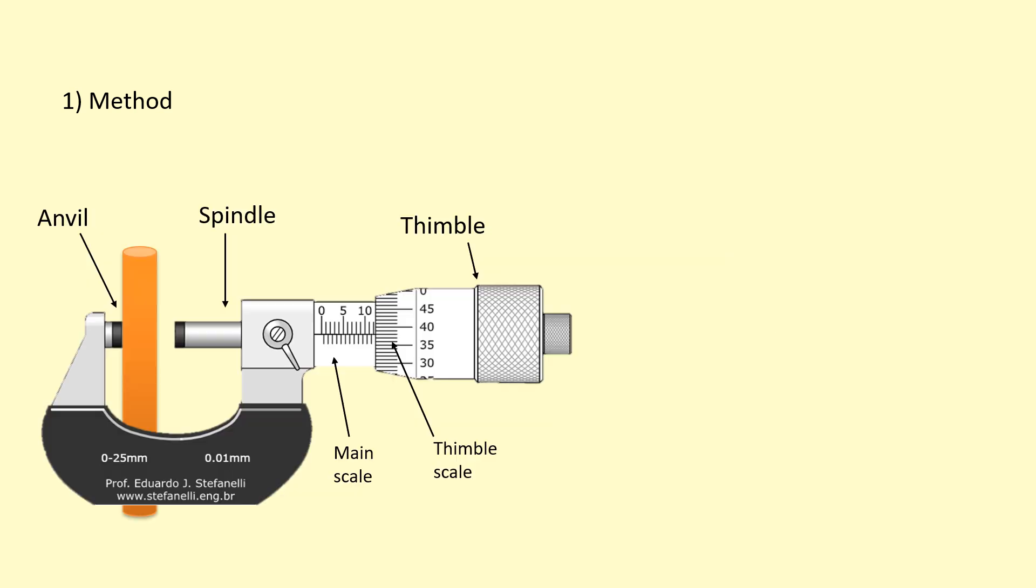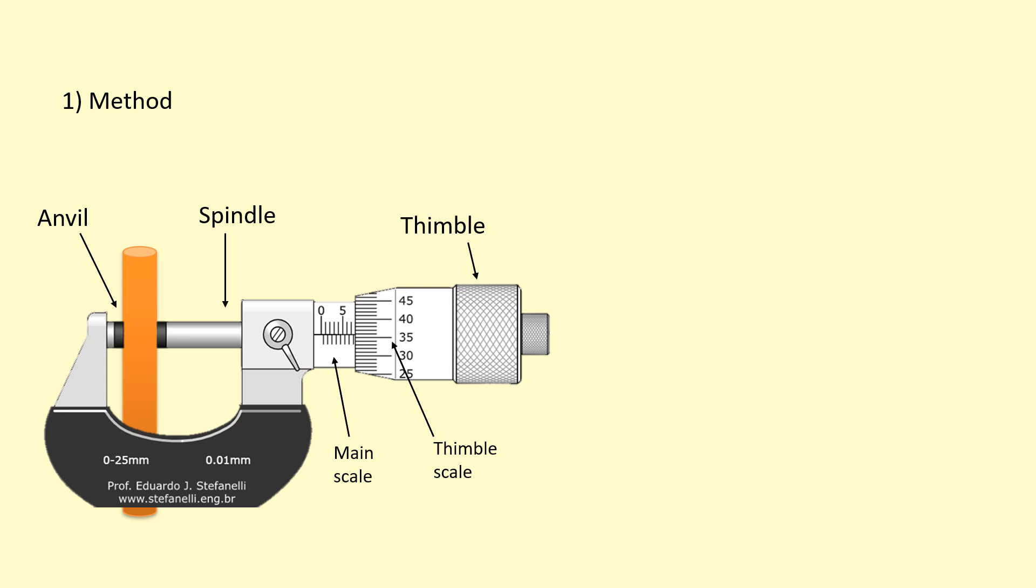Then put the wire between the micrometer like this, close it using the thimble, but make sure you don't squash it. When you can feel some tension, switch to the ratchet, and once you hear one click then don't tighten it anymore because then you're going to squash the wire.